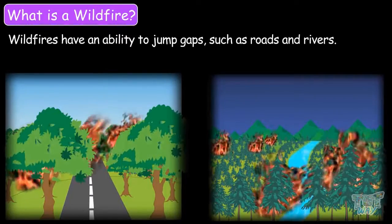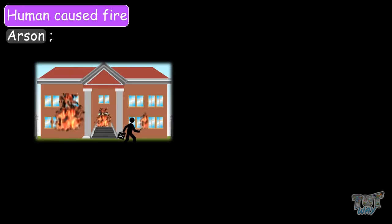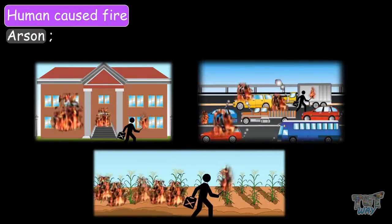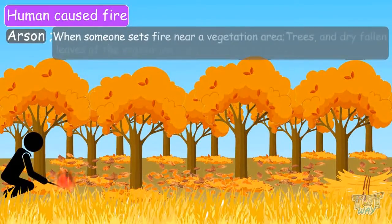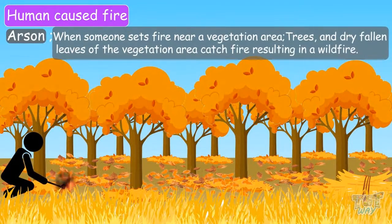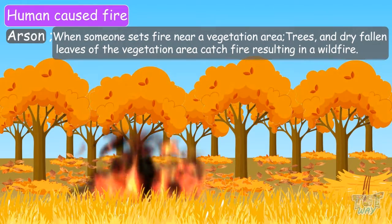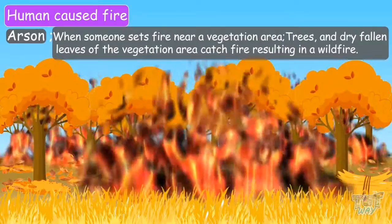Now, let's learn some of the human causes. First is arson. Arson is an act of setting fire to buildings, wild land areas, cars, or any other property. When someone sets fire near a vegetation area, trees and dry fallen leaves of the vegetation area catch fire, resulting in a wildfire.